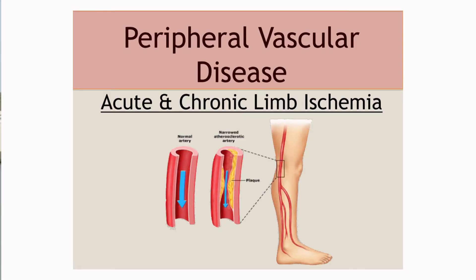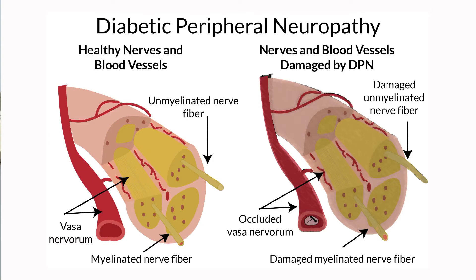Diabetes is a complex endocrine disease that attacks different systems. One of the systems it attacks is the circulatory system. Patients with diabetes have what is called peripheral vascular disease, but in addition to that, it can attack your nerves, and as a consequence, you have peripheral neuropathy.